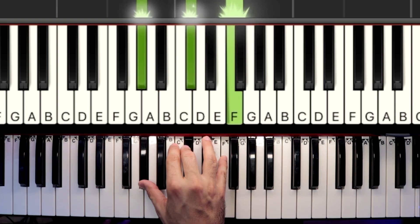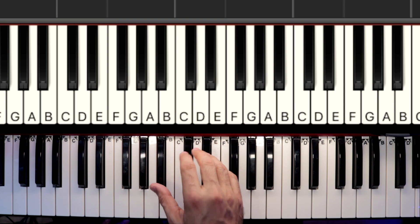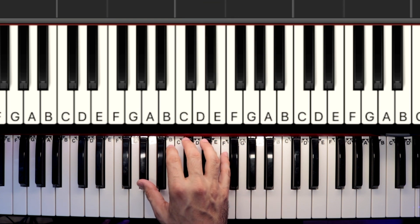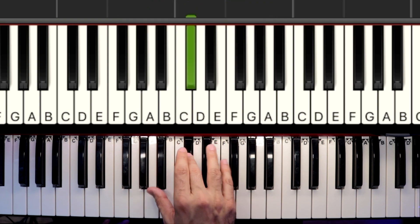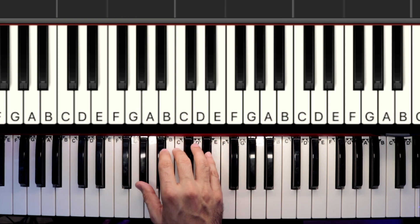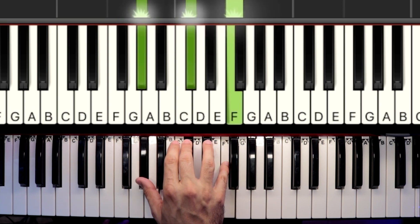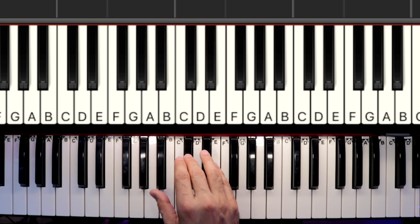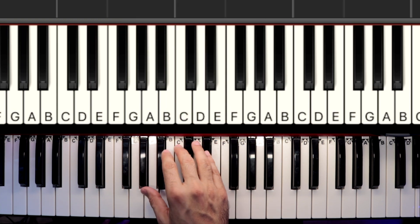After you hold the D flat major we want you to do finger three on D flat, finger four on E flat into the chord that you played before which is A flat and D flat and F. Do this and then change to A flat C and E flat. So practice just that multiple times.